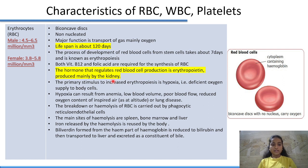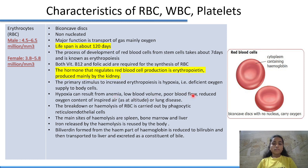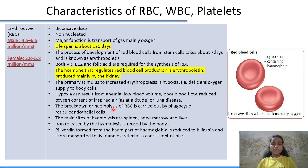The hormone that regulates RBC production is erythropoietin, secreted mainly by the kidney. The primary stimulus to increased erythropoiesis is hypoxia — a condition in which oxygen is deficient in body cells. Hypoxia can result from anemia (low RBC count), low blood volume, poor blood flow, reduced oxygen content of inspired air at higher altitudes, or lung disease. Hypoxia stimulates erythropoiesis.